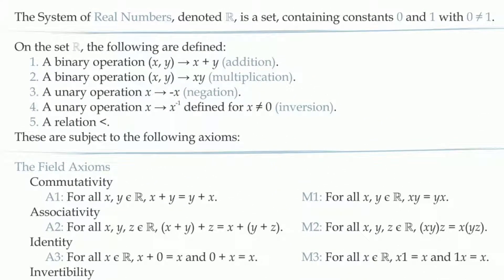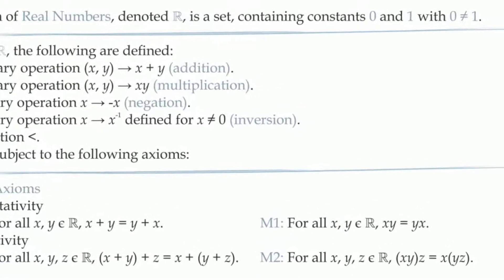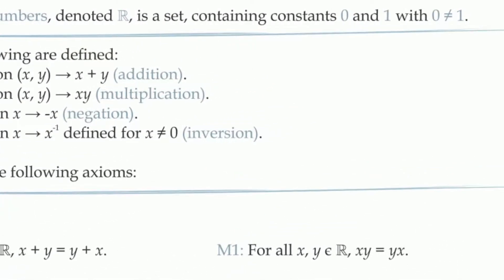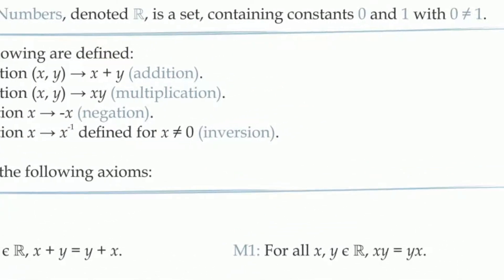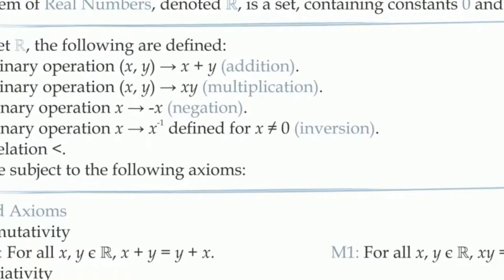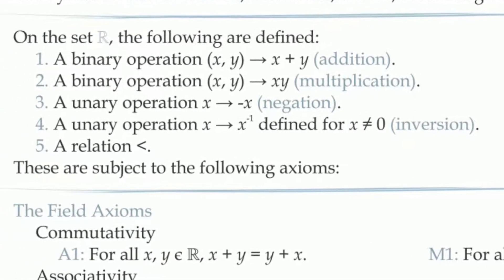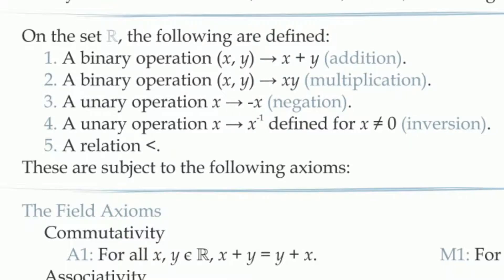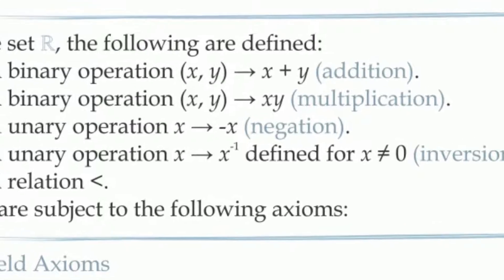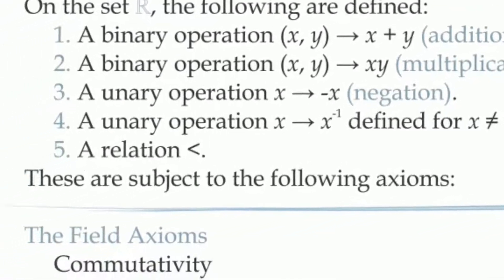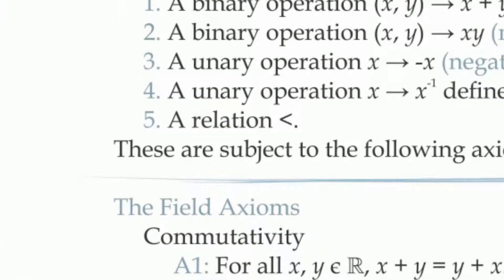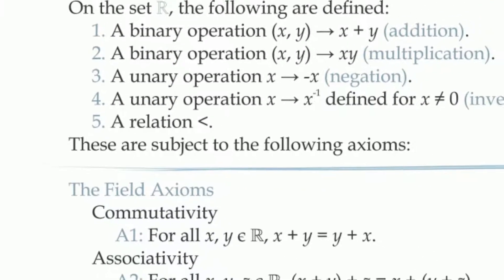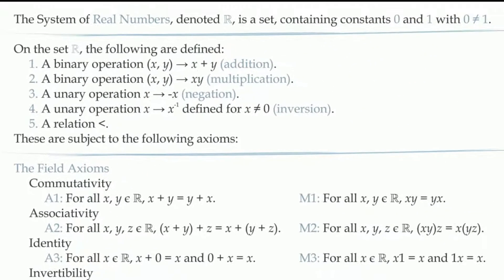The real numbers are defined to be a set containing constants 0 and 1, which are not equal to one another. This set also has two binary operations, addition and multiplication, as well as two unary operations called negation and inversion — inversion being only defined for non-zero real numbers. There is also a relation defined on the real numbers, which we denote using the less than symbol. At least that much should be common to any definition of the real number system.